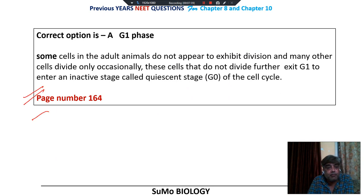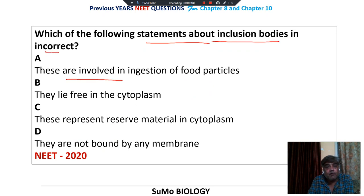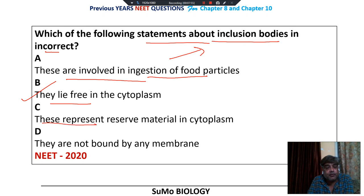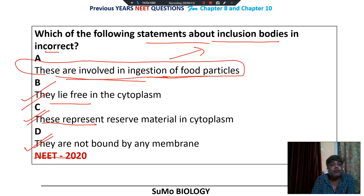Mentioned on NCERT page number 164. Which of the following statements about inclusion bodies is incorrect? They are involved in ingestion of food particles — this is the wrong statement. They lie freely in the cytoplasm — correct. They represent stored food material in the cytoplasm of prokaryotic cells — correct. They are not membrane bound — correct. So the false statement is option A: they are involved in ingestion of food particles.